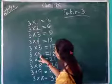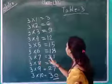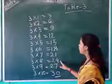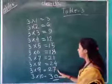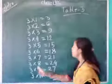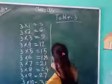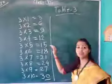3 sixes are 18, 3 sevens are 21, 3 eights are 24, 3 nines are 27, 3 tens are 30. Table 1, table 2, and table 3.